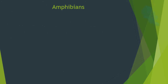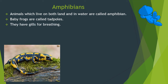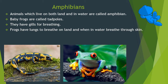Animals which live on both land and in water are called amphibians. Baby frogs are called tadpoles — they have gills for breathing. Frogs have lungs to breathe on land, and when in water, breathe through skin. They have webbed hind feet to swim. For example: salamander, green tree frog.